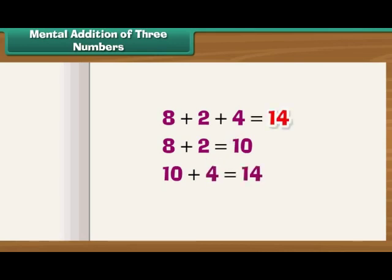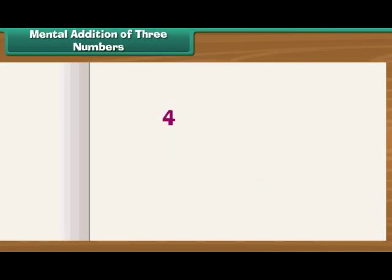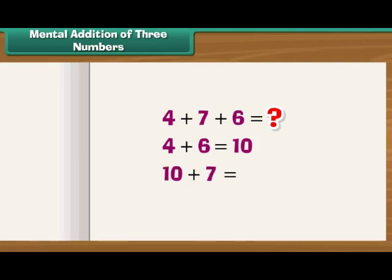What is 4 + 7 + 6? We add 4 and 6 first because 4 + 6 = 10. Now we add 7 to the 10. 10 + 7 = 17. Therefore, 17 is the answer.